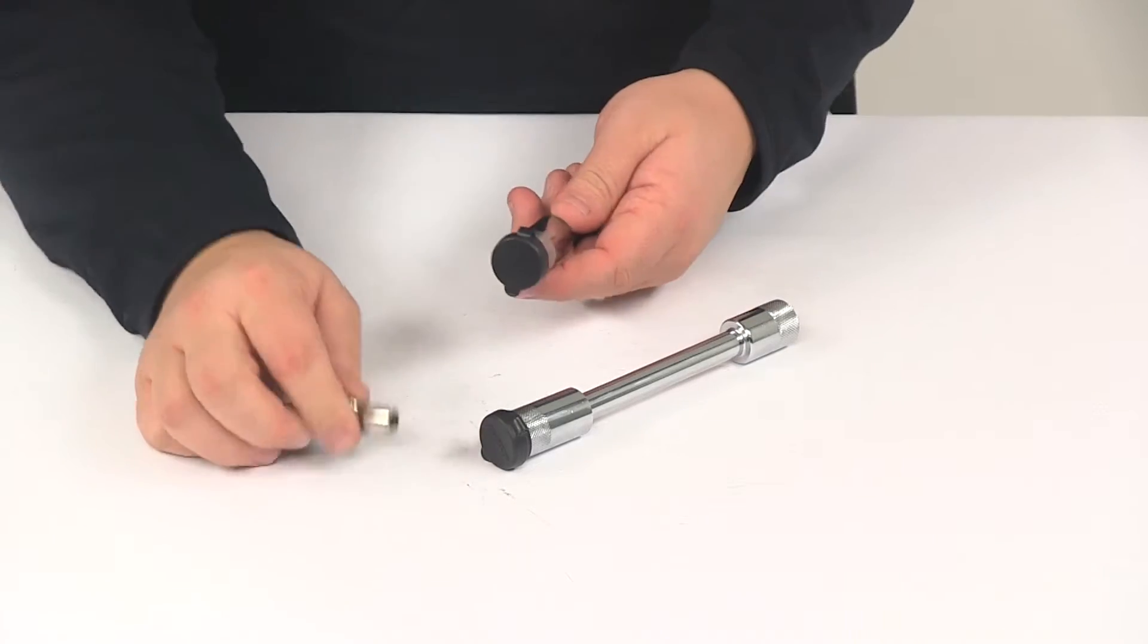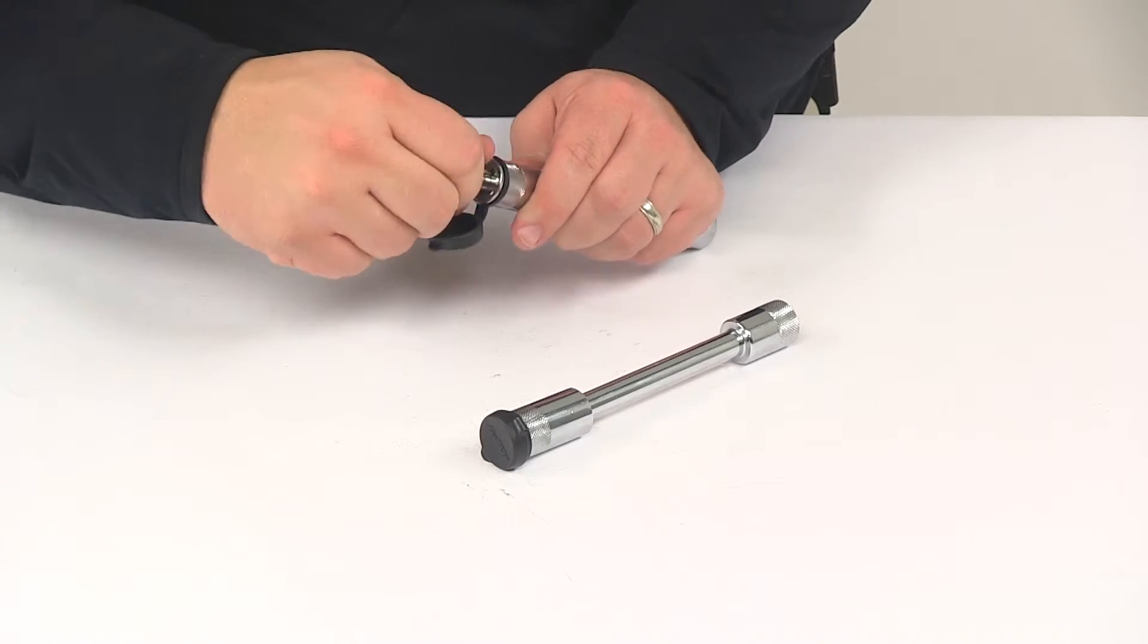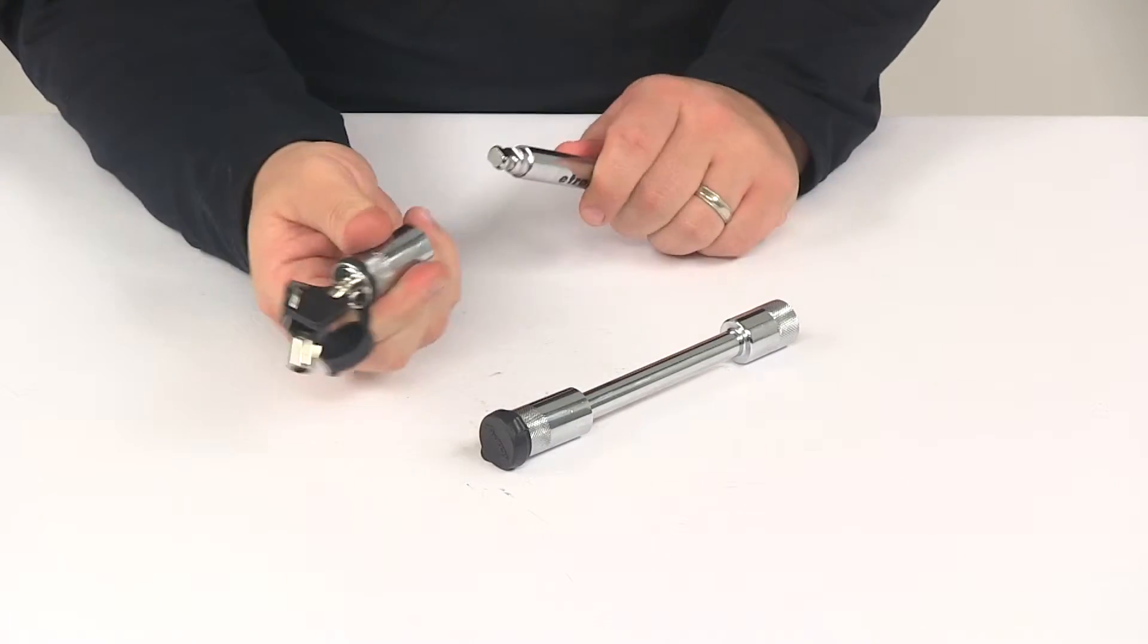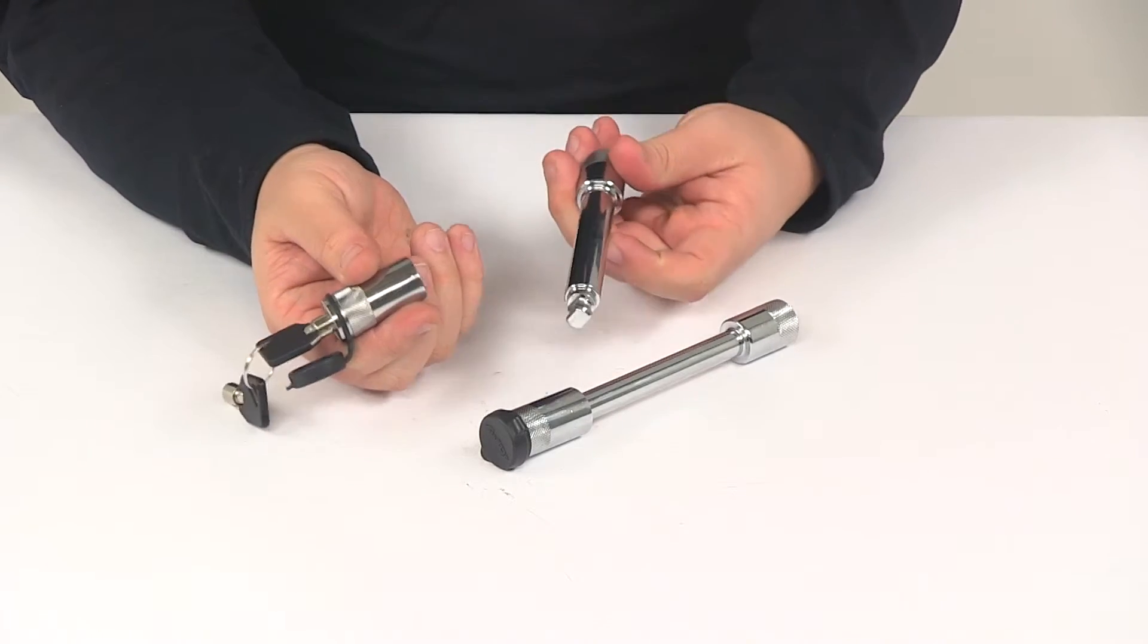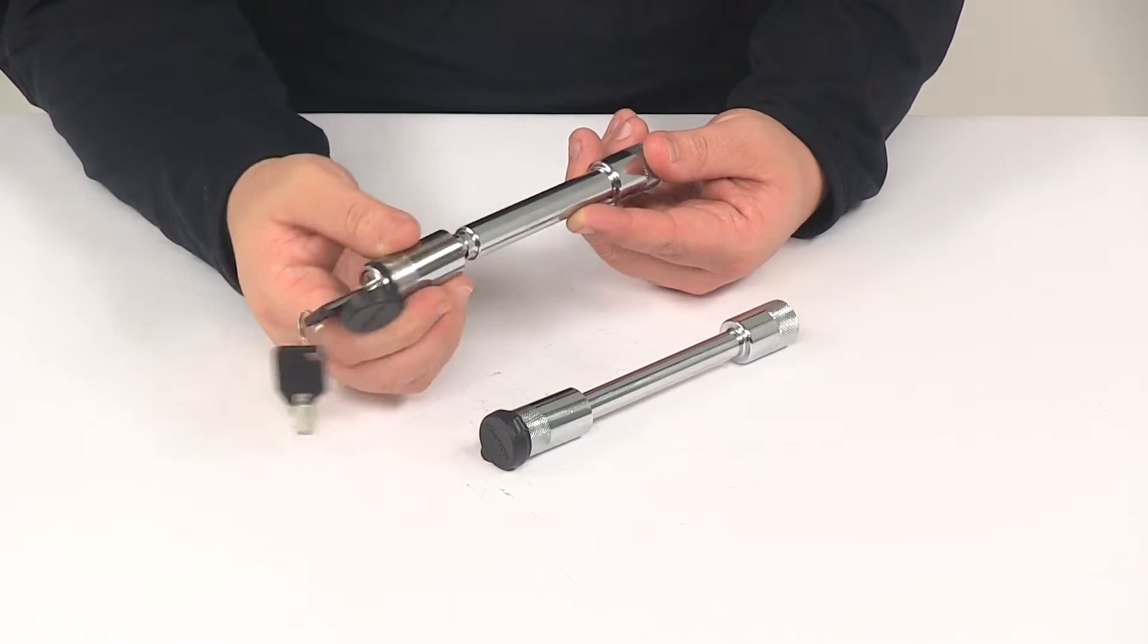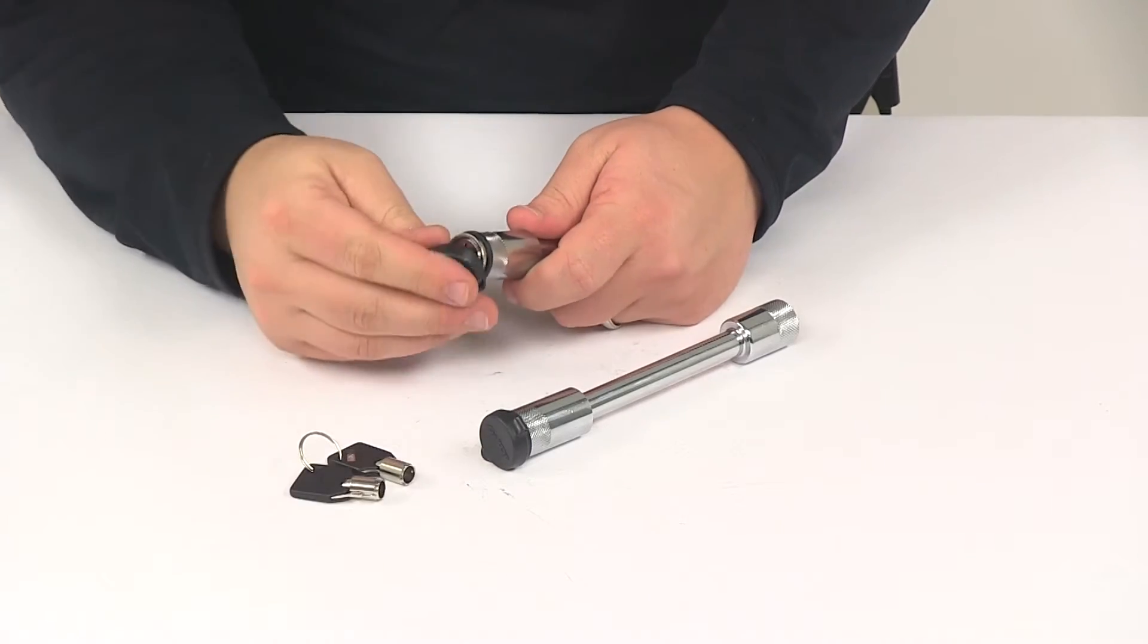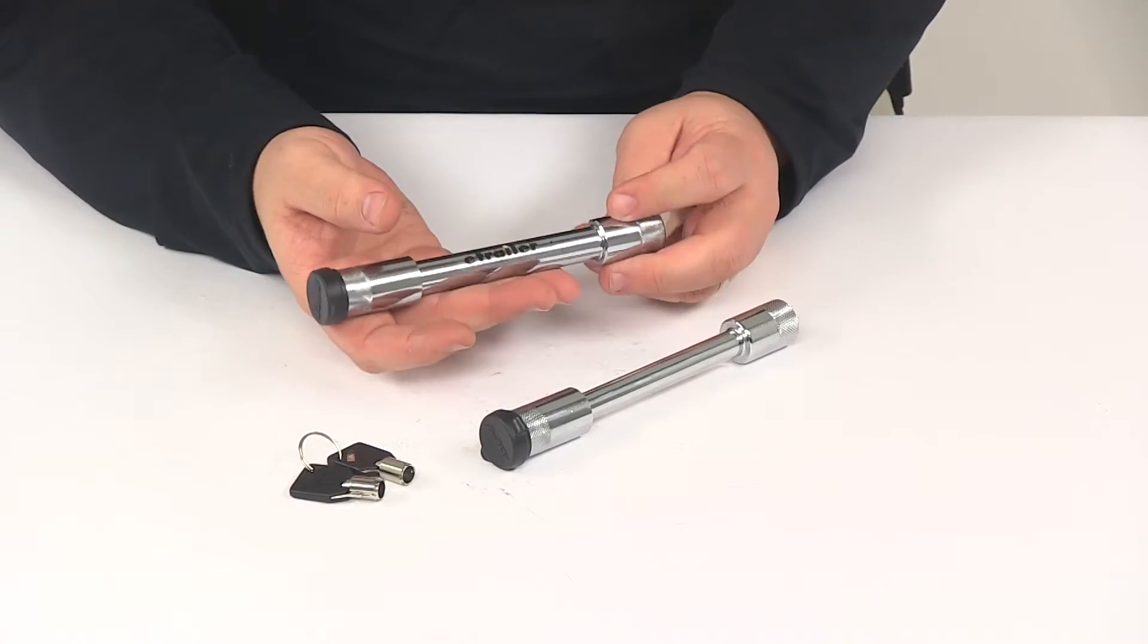Very easy to use. You place the key in, give it a twist, pops the lock off. So you slide this through the hitch making sure it goes through the shank on the ball mount, out the other side, put the lock on, rotate it to the lock position and that's all there is to it. Now it's going to be locked to your vehicle.